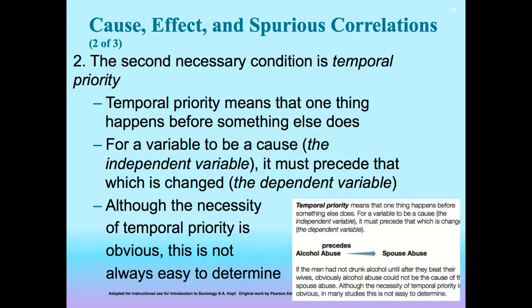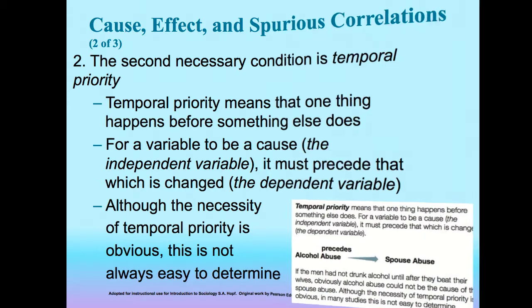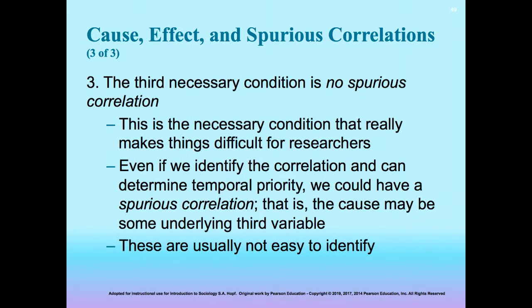In order to establish causation, there must also be what's known as temporal proximity. Temporal proximity means that one thing happens before something else does. For a variable to be a cause — the independent variable — it must precede that which is changed, the dependent variable. And it's critical that the researcher determine that there are no spurious correlations. This is a very difficult thing to do when measuring the social world, which is a complex place with many different factors and variables leading to our social outcomes.